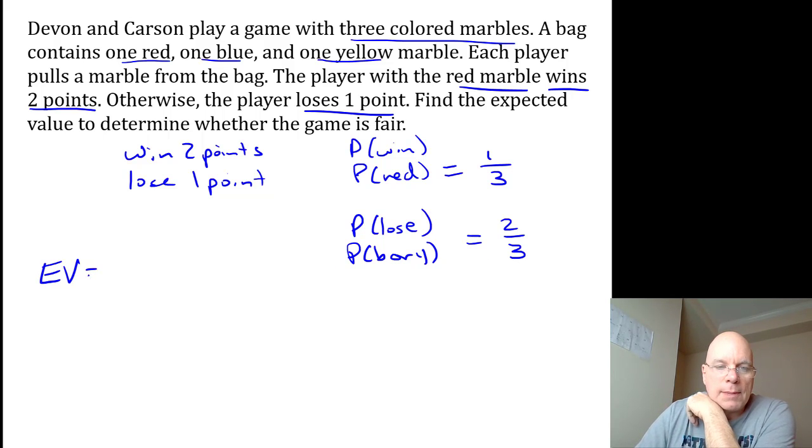You figure out the expected value by multiplying the probability of each event by the value of each event. There's a one-third chance of winning, and you gain two points if you win, if you get the red marble. So one-third multiplied by positive two.